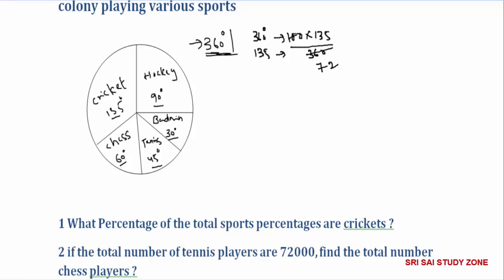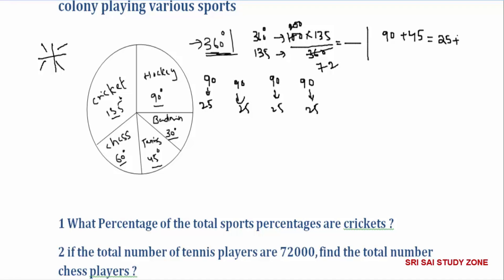Using a shortcut: 360 degrees is 4 parts of 90 degrees each, and each 90 degrees carries 25 percent. Since 135 equals 90 plus 45 — where 90 degrees is 25 percent and 45 degrees is 12.5 percent — that gives us 37.5 percent. This way of thinking using mental calculation is very important.